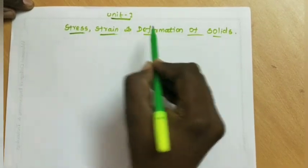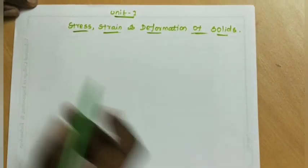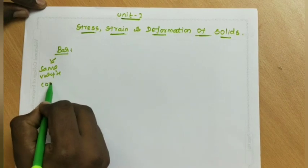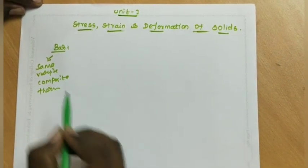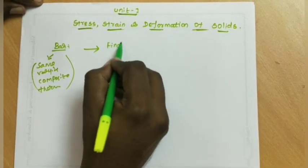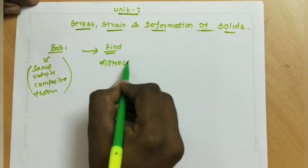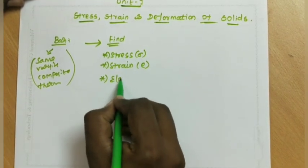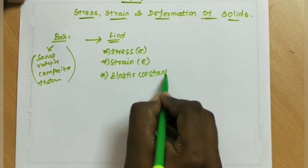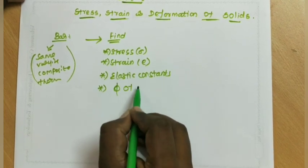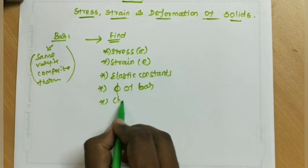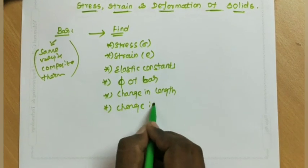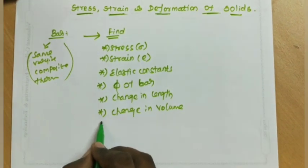For all 5 units, a small review: Unit 1 is Stress, Strength and Deformation of Solids. What we need to do is consider a bar — same section, varying section, composite, or thermal. We find Stress (sigma), Strain, and Elastic Constants (E). Also finding changing diameter, changing length, changing volume.